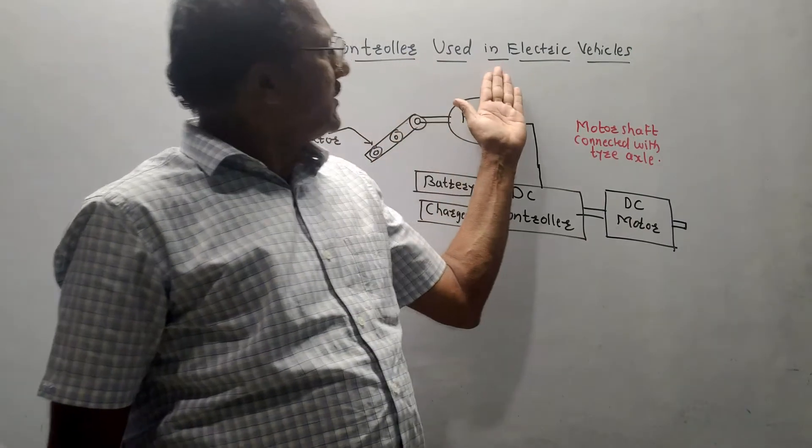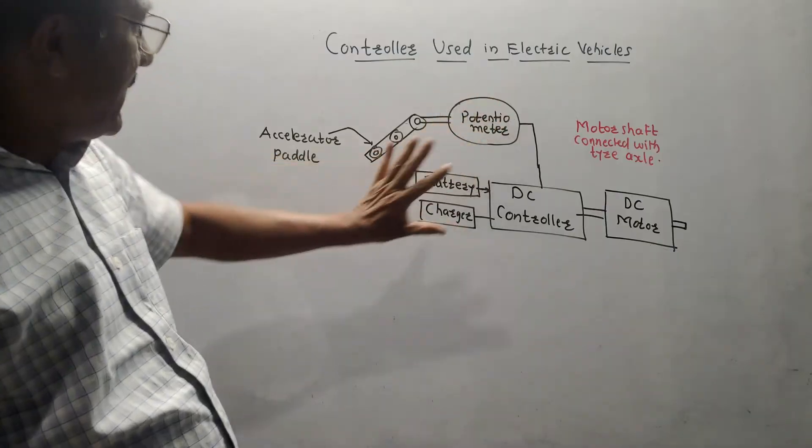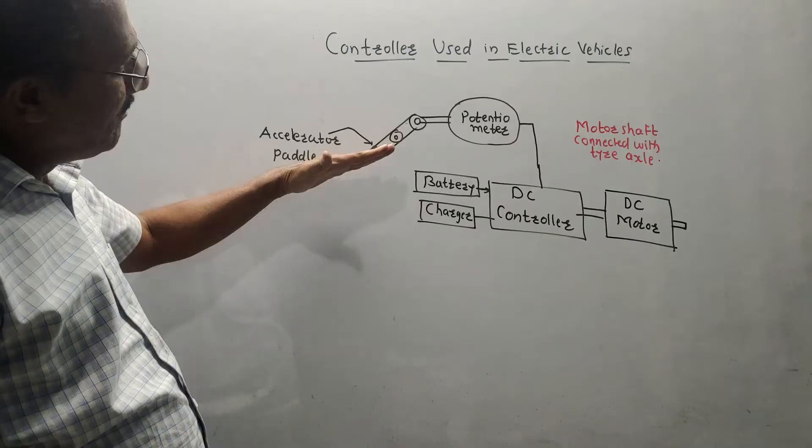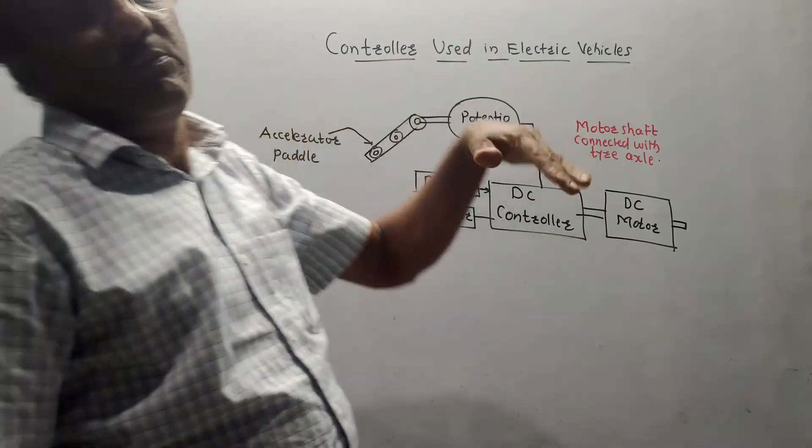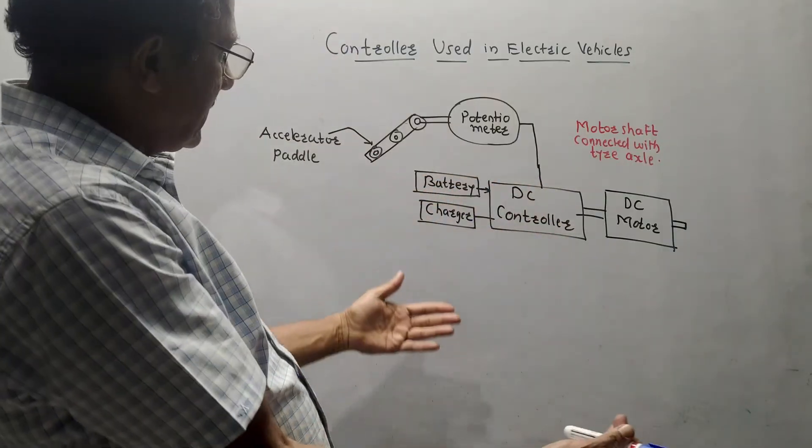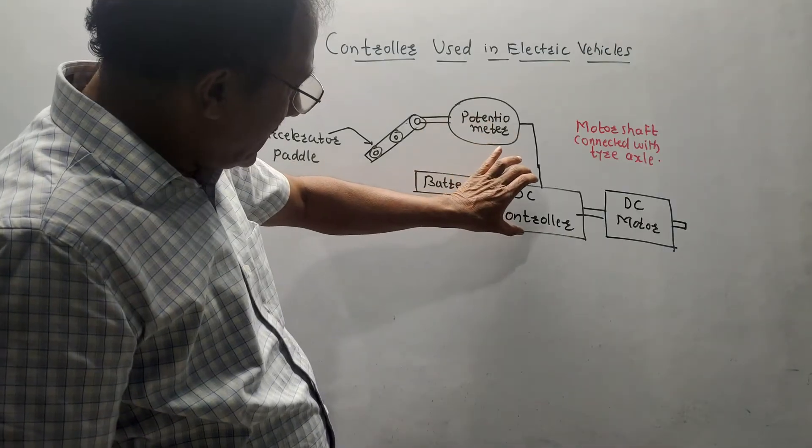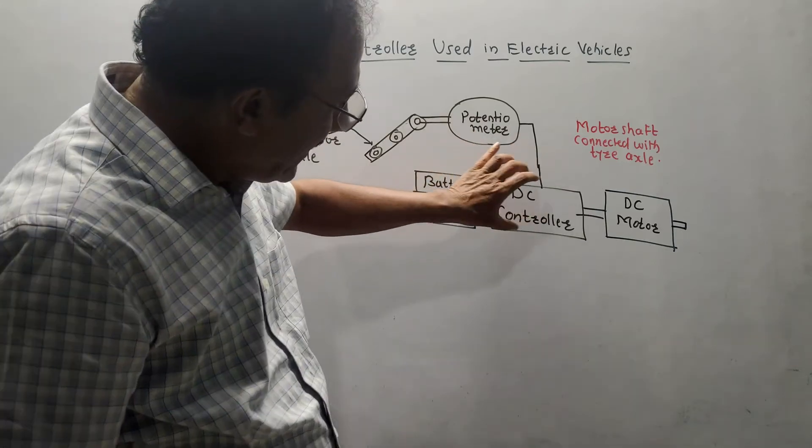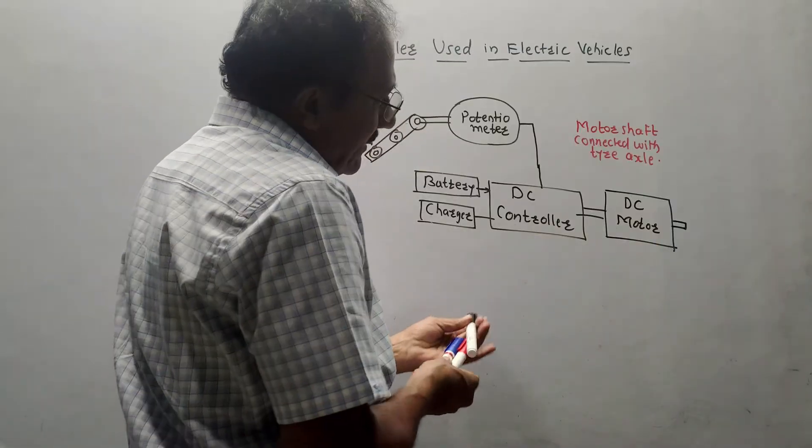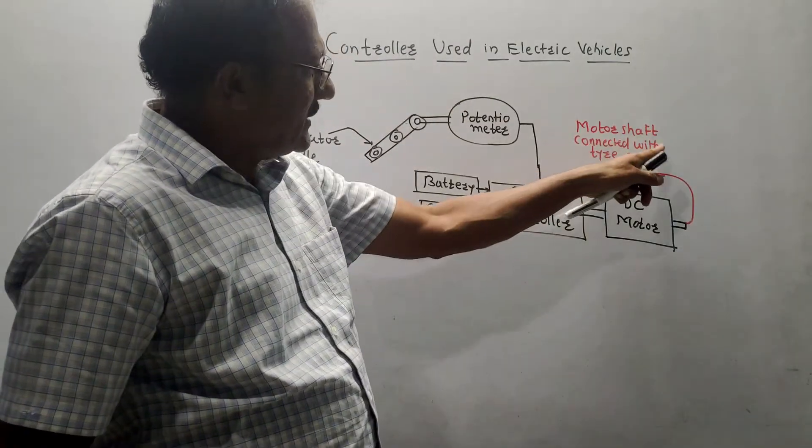Now, the last part of this unit is controllers used in electric vehicles. This is, again, a pretty simple part. I have shown the block diagram of these controllers. This is the accelerator pedal. The driver has to press this accelerator pedal. When potentiometer is used, we know that potentiometer is basically a variable resistance. DC controller controls all the operations. To this, battery and charger are connected. DC controller takes the signals from the battery and accordingly, it generates the corresponding signal which drives the DC motor and output of DC motor is connected. It is written, motor shaft is connected with tire axle.